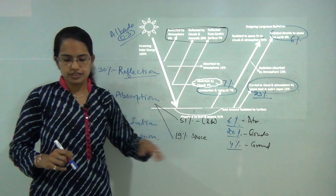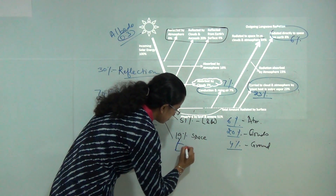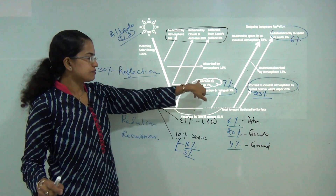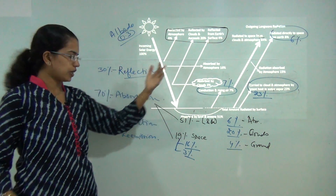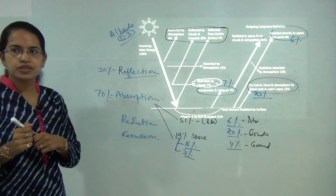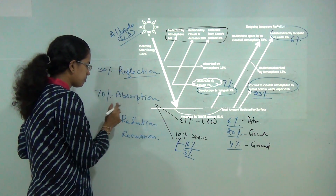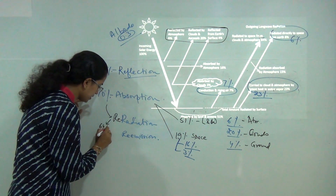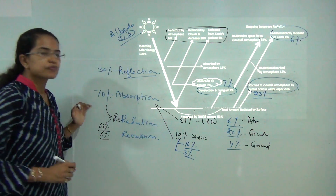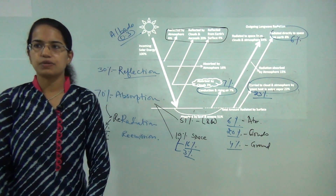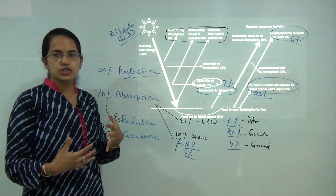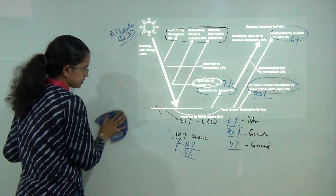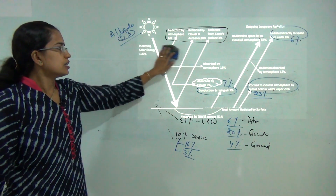The 19 percent absorbed by the atmosphere is further divided: 16 percent is radiated into space and the remaining 3 percent is transported to the clouds where it is absorbed and further utilized. Of the 74 percent total that is absorbed, it is re-radiated into the atmosphere — 64 percent by means of clouds and 6 percent from the ground. Finally, re-emission occurs through infrared rays from greenhouse gases, which increase the temperature on the Earth's surface.